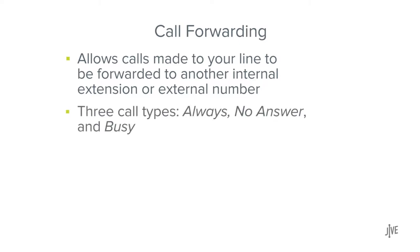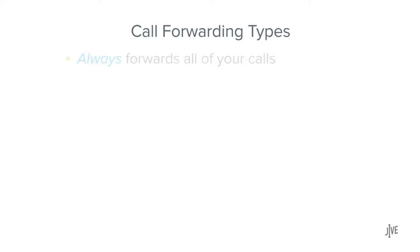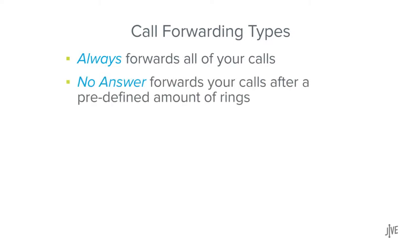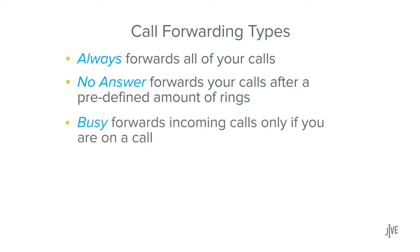There are three different types of call forwarding: Always, No Answer, and Busy. Always forwards all of your calls. No Answer forwards your calls after a predefined amount of rings. And Busy forwards incoming calls only if you are already on a call.